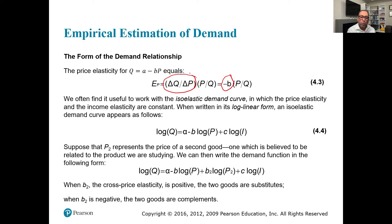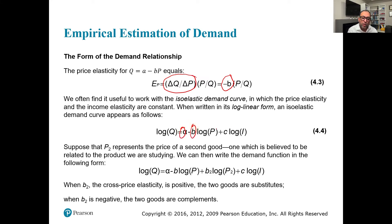We often find it useful to work with the isoelastic demand curve, in which price elasticity and income elasticity are constant. Written in log-linear form, it is: log(Q) = α − β·log(P) + c·log(I). These coefficients give us percentage changes: −β is the price elasticity of demand, and c is the income elasticity. This log-linear form is what we specifically call the isoelastic demand curve.